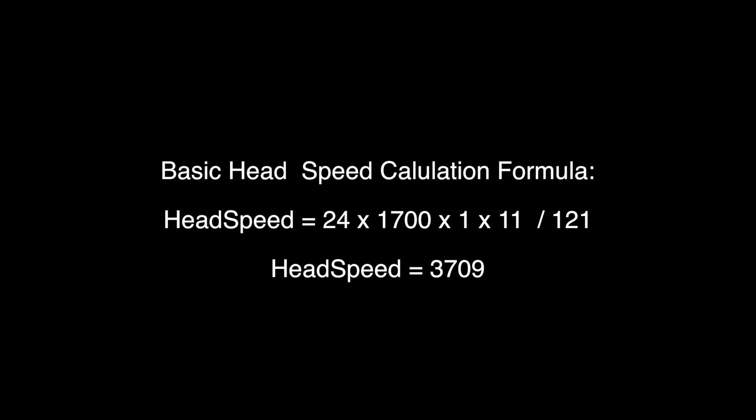So doing the math, it looks like my head speed is going to be 3709. But that's at 100% throttle. I'm actually running a throttle curve of 80% right now. So if you calculate that 3709 times 0.8 to get the 80% throttle curve, my estimated head speed is going to be 2967. So let's see how close we get.